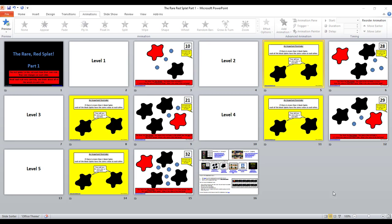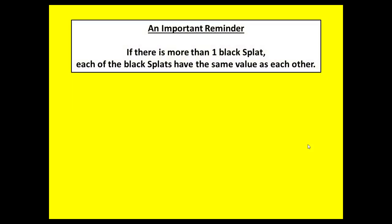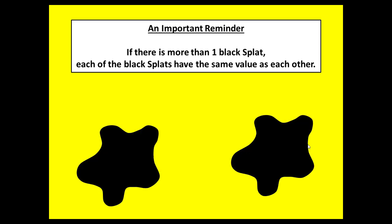You can see that there are some yellow slides beginning at level two. Level two begins with a reminder. If there is more than one black splat, each of the black splats has the same value as each other. Two black splats appear as an example, along with the note: these will have the same value as each other.